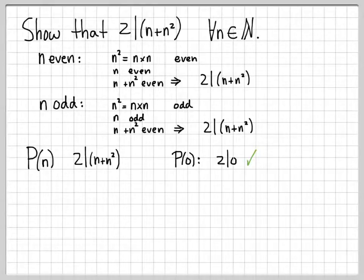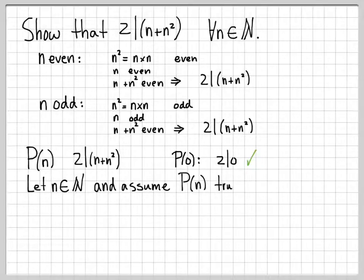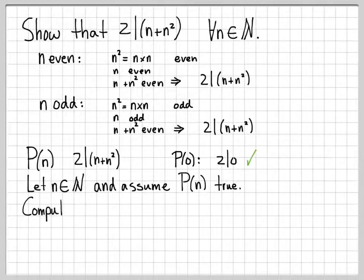The next step in mathematical induction is we let n be an n, and we assume that P of n is true. Then we need to show that this implies that P of n plus one is true. To start this part of the proof, we're going to write down or compute what the P of n plus one statement is.